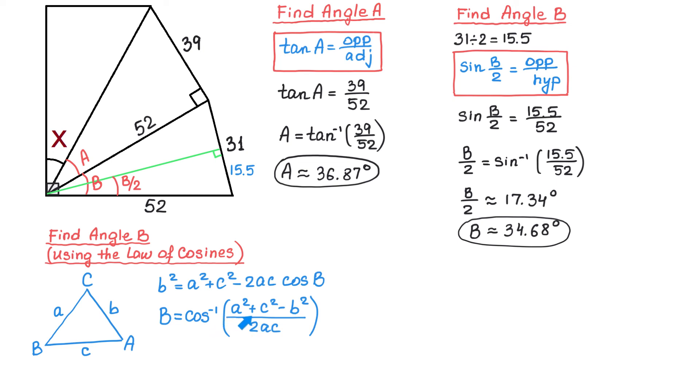In our problem sides A and C are both 52 units, and side B is the side opposite of angle B and it is 31 units. We replace these numbers in this formula and get: angle B equals cosine inverse of 52 squared plus 52 squared minus 31 squared all over 2 times 52 times 52. Using a calculator, angle B is approximately 34.68 degrees.